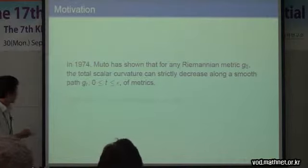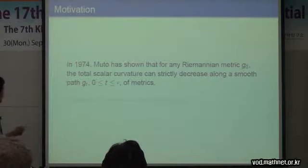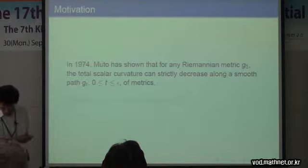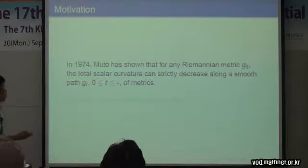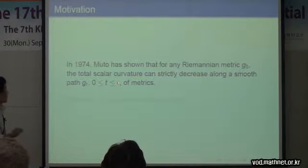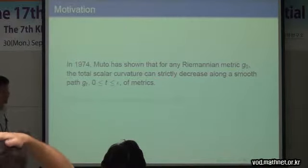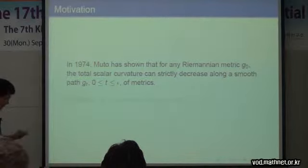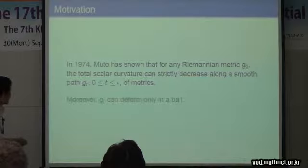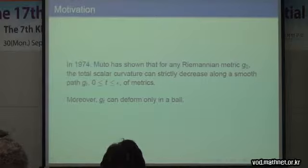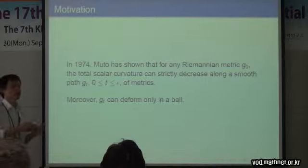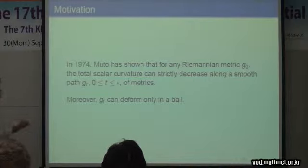Let me start with the old work. In 1974, a geometer showed that for any Riemannian metric G0, one can find a smooth path of metrics from 0 to epsilon such that the total scalar curvature can strictly decrease. When choosing this metric, one could choose G_t to deform only in a ball, so this is quite a local construction — the total scalar curvature decreases.